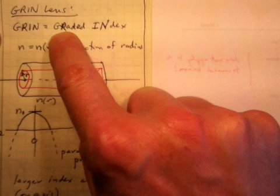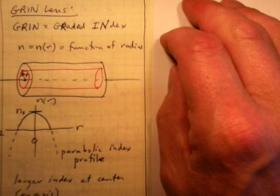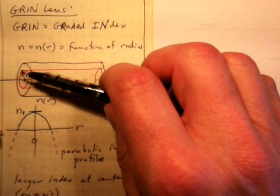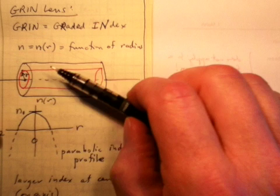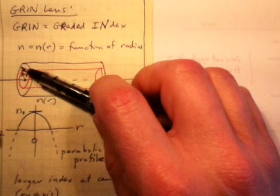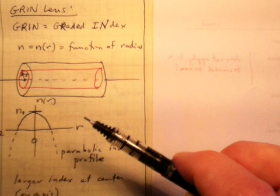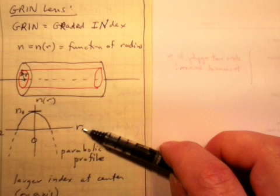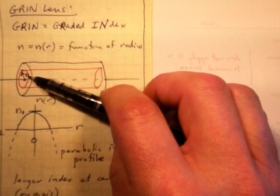GR for graded, IN for index. And what it is, is it's a cylinder of glass where the index of refraction varies with the radial distance from the axis. And what we've got here is plotted, the index is a function of R. R is the radial distance from this axis, like this picture.